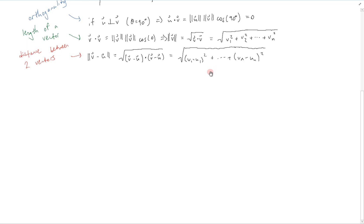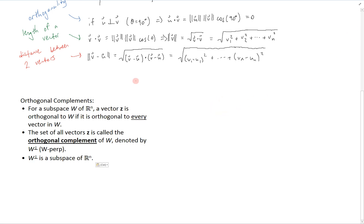Using these principles, we can define the orthogonal complement of a subspace. Here is a definition of an orthogonal complement. For subspace W of Rn, a vector z is orthogonal to W if it is orthogonal to every vector in W. The set of all vectors z is called the orthogonal complement of W, and is denoted by W with a superscript perpendicular sign, also called W perp. And W perp is a subspace of Rn.